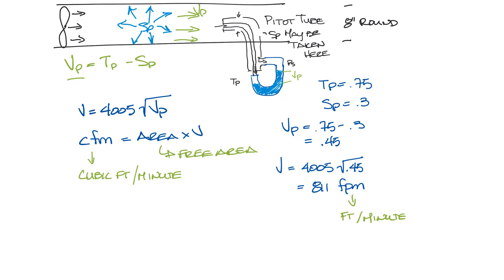The airflow, the CFM, is equal to the area of this 8-inch round duct times the velocity. Let's calculate the area. The area is pi r squared, which equals 16 pi, which equals 50.24. But we need to convert this to square feet, so divide by 144. That gives us 0.35 square feet. So 0.35 times 811 feet per minute is 284 CFM.